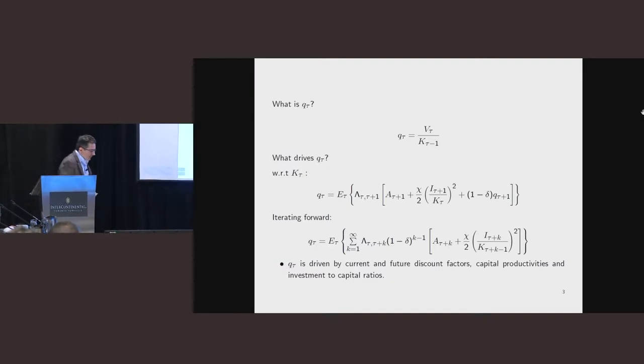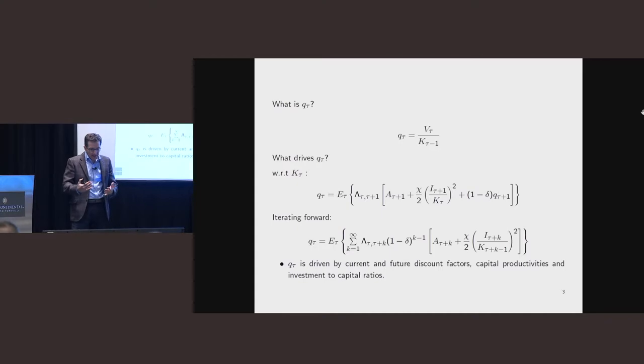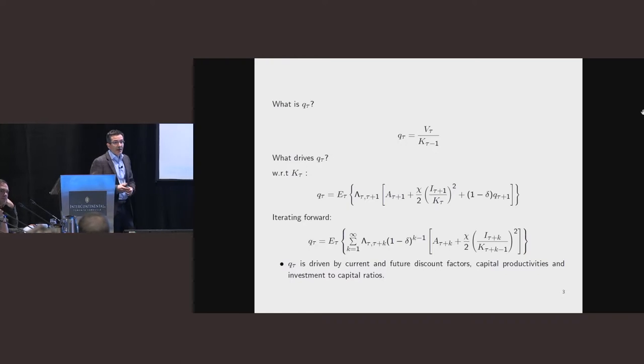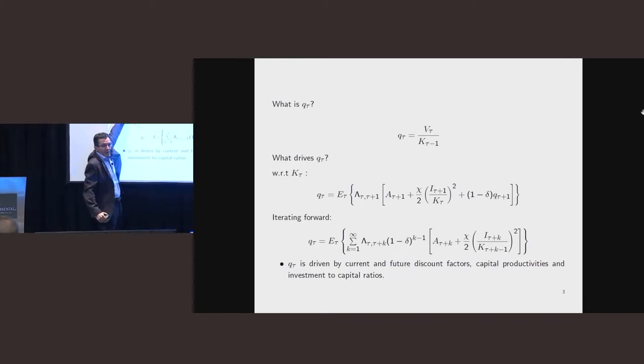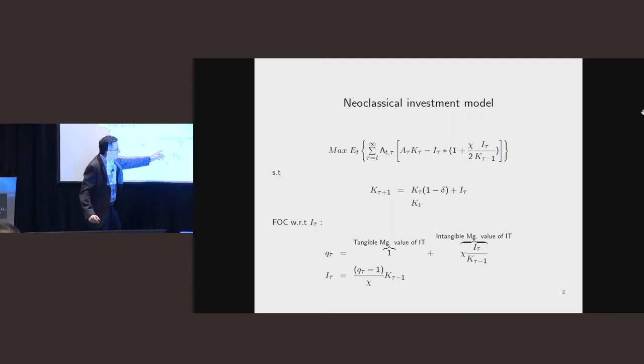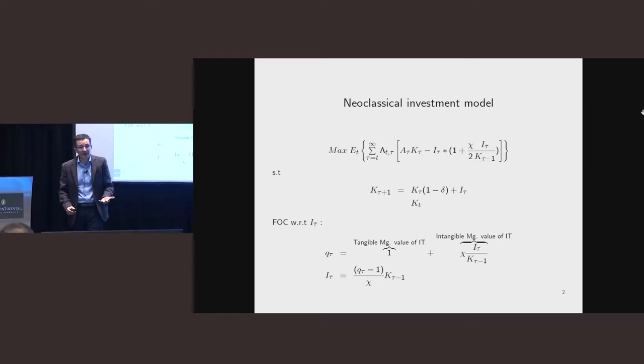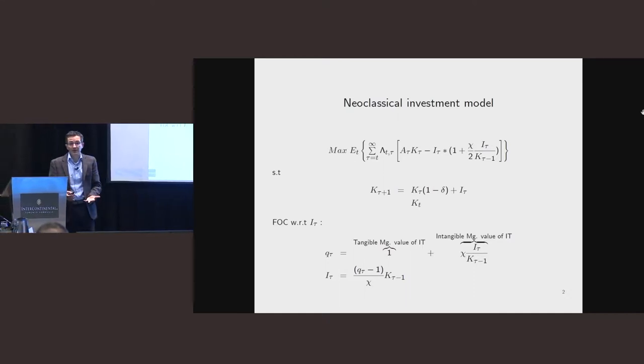So that equation is kind of nice because you can isolate I from here. So for given Q, for given K, you can isolate I, and that gives you the investment function. That gives you how much investment you're going to be making. And so when Q is higher, I'm going to invest more. So then what the authors say, what's the connection between Q and I and the market value of the company? And that's very easy. So the value of the company is equal to the amount of capital I have times the shadow value of capital, times Q. So that's the relationship that they have in mind.